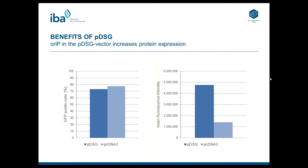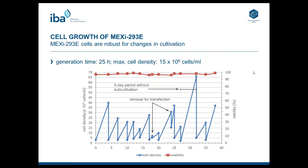Very importantly, all elements on this vector are license-free and contain no IP elements. Here we see results of an experiment comparing expression in Maxi cells using a PDSG vector versus a pcDNA3 vector, which is a very common vector — both controlled by a CMV promoter, but the PDSG vector has an OriP. We transfected the cells with GFP and achieved very nice transfection efficiency with both plasmids. However, the mean fluorescence intensity shows a three-fold higher expression rate with the PDSG vector compared to pcDNA3, due to the enhancer function of the OriP.